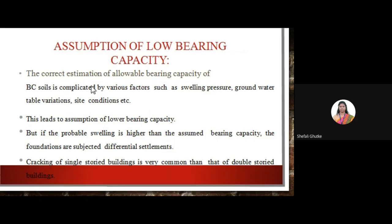The correct estimation of the allowable bearing capacity of black cotton soil is complicated because of various factors such as swelling pressure and groundwater table variation. Continuous fluctuation in the groundwater table and site conditions create difficulty in correcting the allowable bearing capacity, leading to the assumption of a low bearing capacity. If the probable swelling is much higher than the bearing capacity, the foundation is subjected to differential settlement. Cracking of single-storied buildings is very common compared to double-storied buildings.